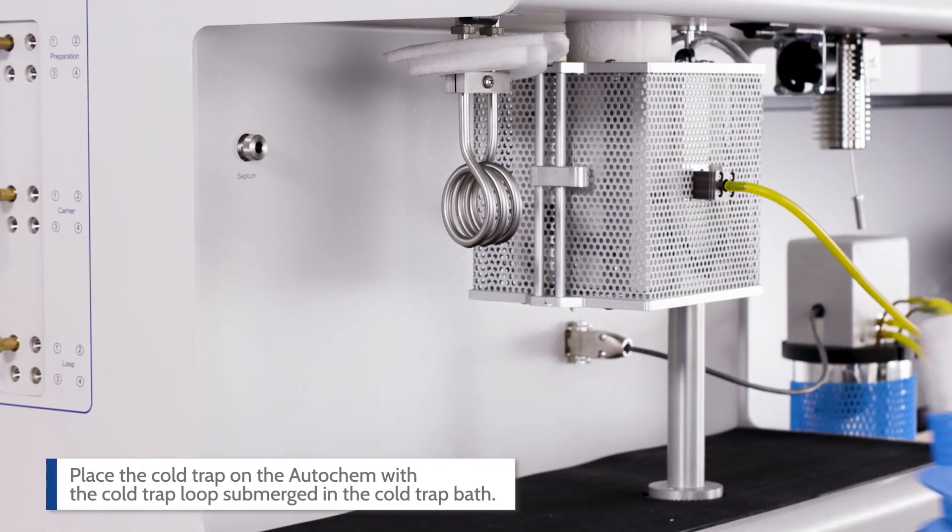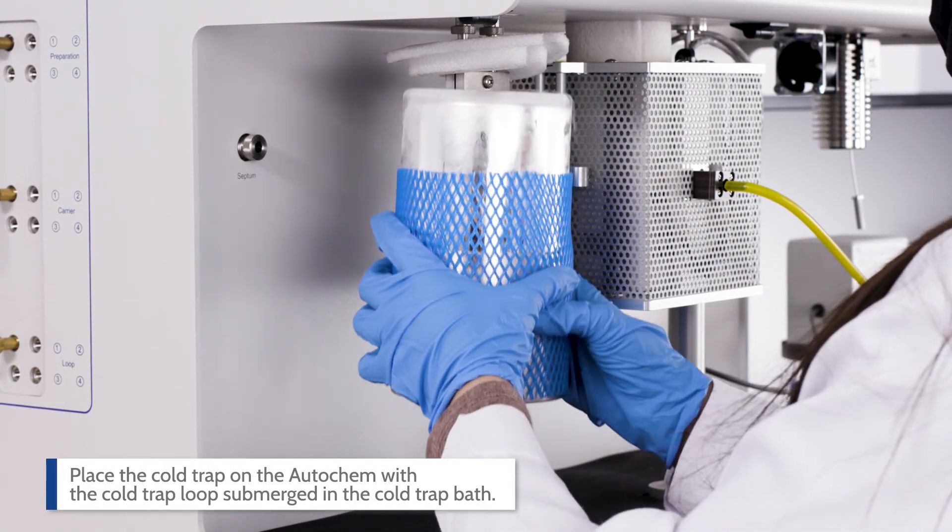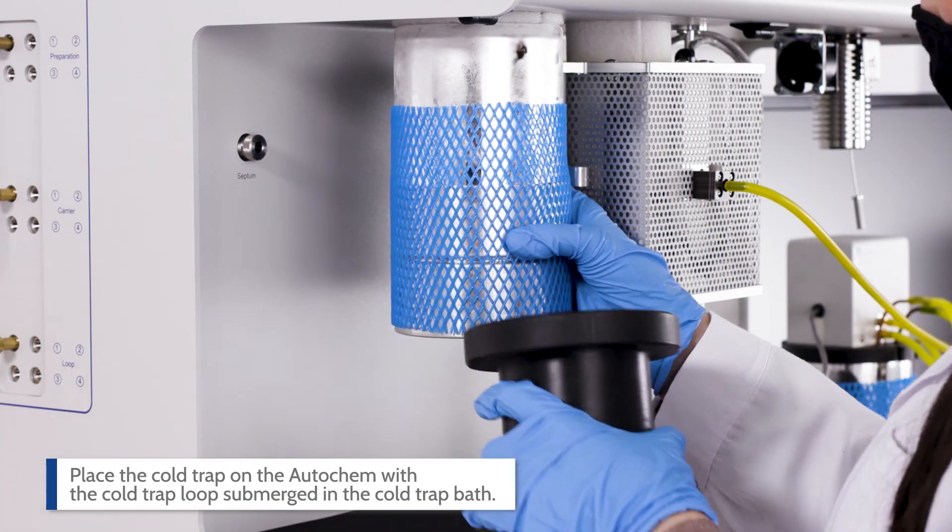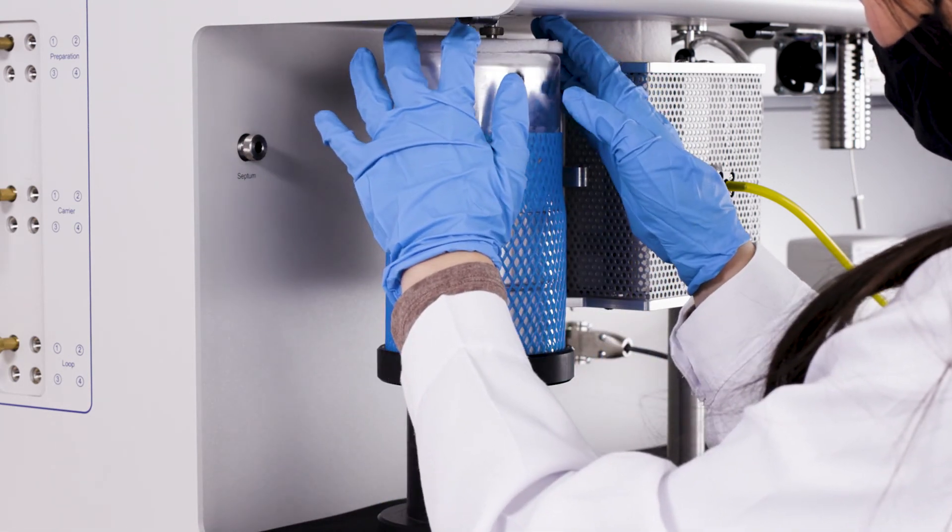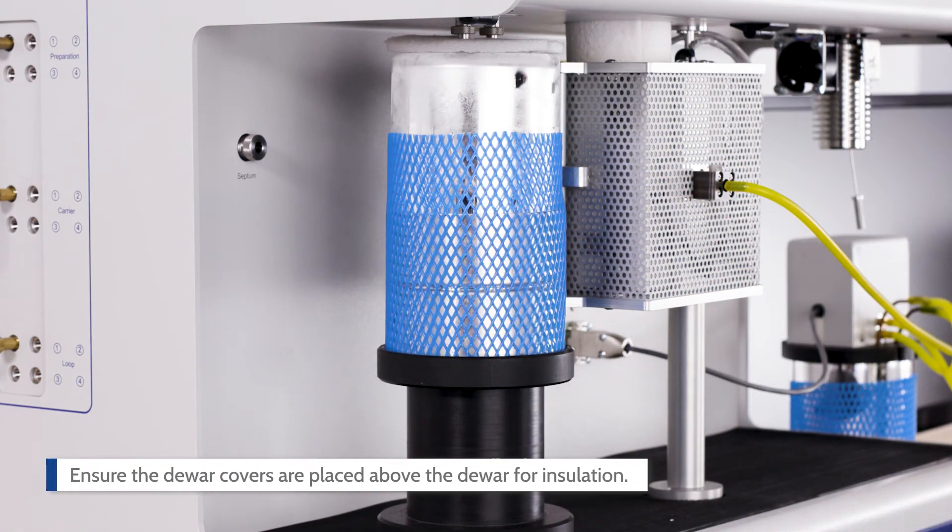Place the cold trap on the AutoChem with the cold trap loop submerged in the cold trap bath. Place the stand underneath the Dewar to keep it in position. Ensure the Dewar covers are placed above the Dewar for insulation.